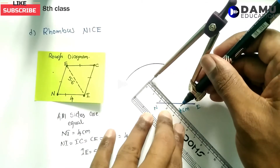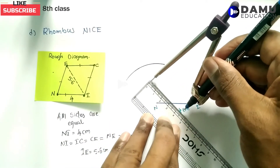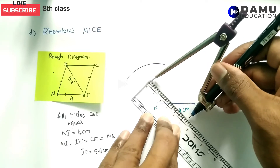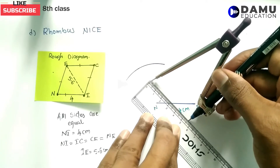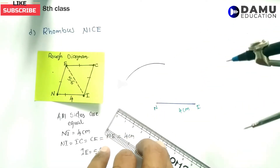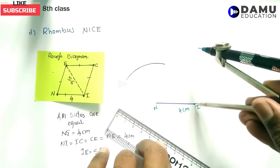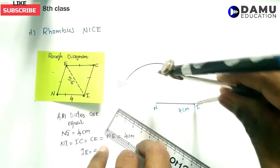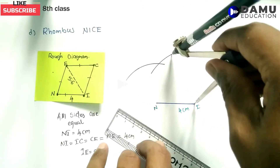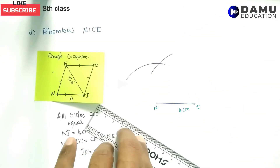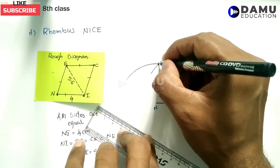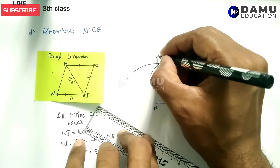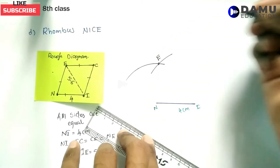Let's take from 0 to 5.6 centimetres. This is after 5, then 1 mm — so after 5, 6 mm we need to take. This is the point where the two arcs are meeting, and that point is I.